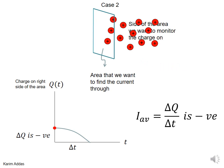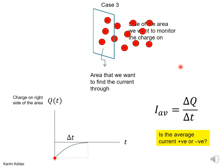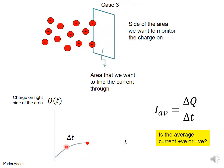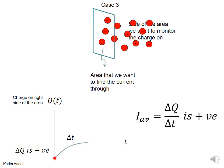There's a subtle issue about the sign that is important to get right. Case 3: we start with negative charge on the right side, so at time zero the charge is a negative value. As the animation proceeds, the amount of negative charge on the right side gets less negative — it's getting bigger. So in this case, the final charge is bigger than the initial one, which corresponds to a positive current.